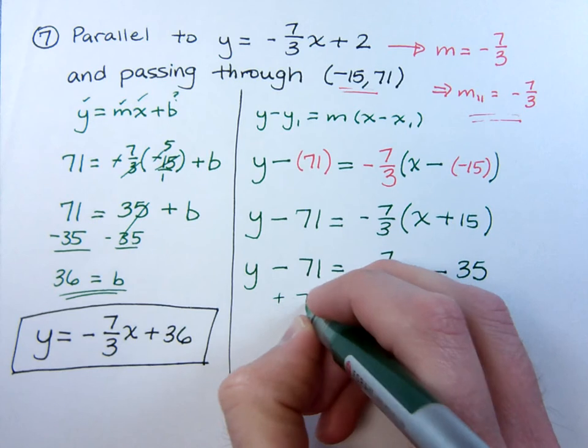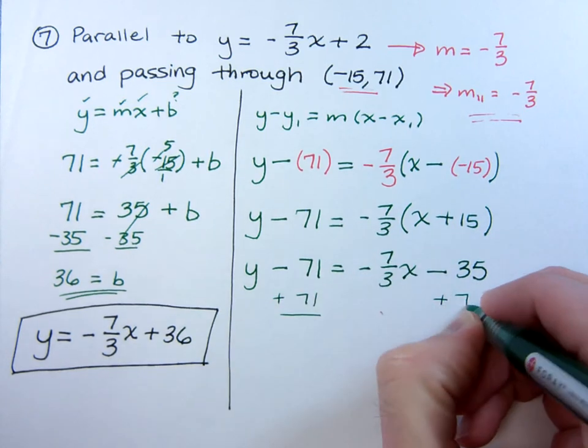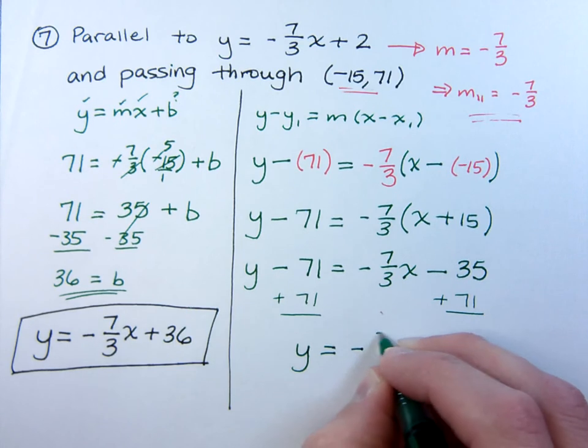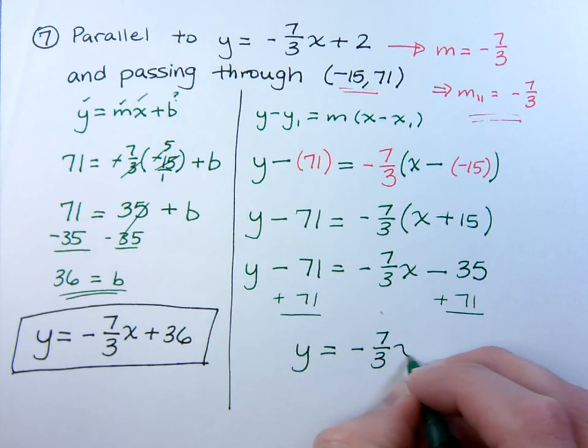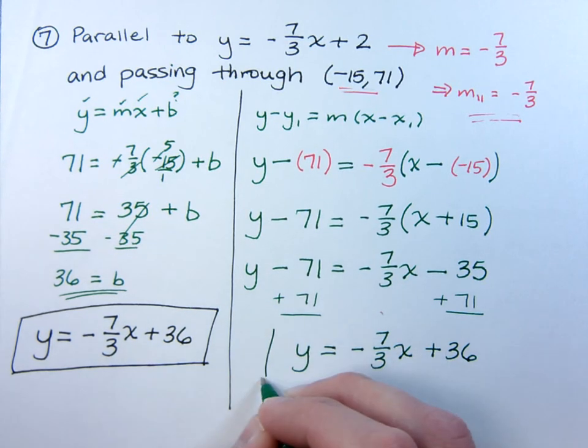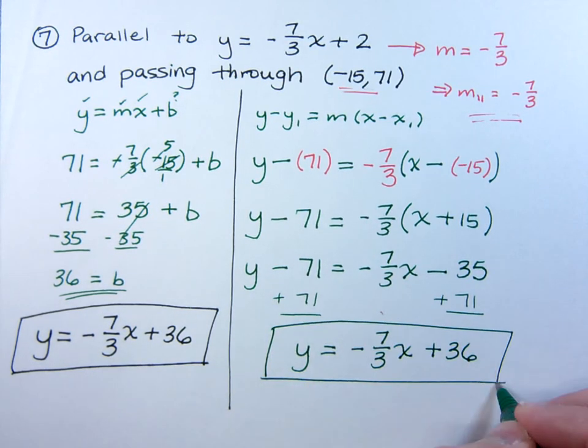And then we just need to add the 71 to both sides. So y is equal to negative 7 thirds x plus 36. And this is the same answer that we got the first time that we did the problem.